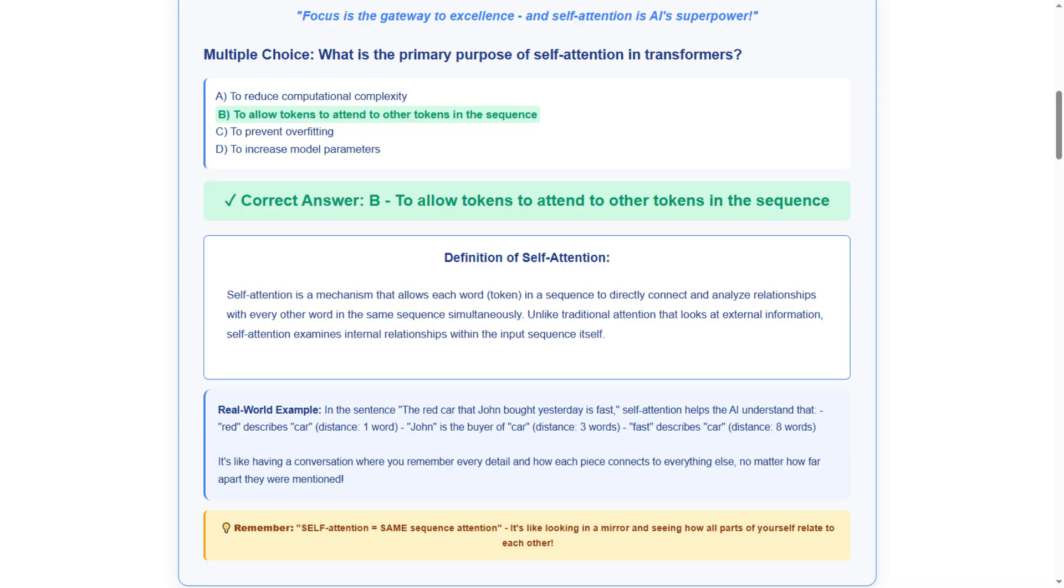Our real-time example demonstrates connection across word distances. Red to car is one word apart. John to car is three words apart. And fast to car is eight words apart. This shows distance-independent understanding. The memory tip tells us self-attention equals same-sequence attention, like looking in a mirror and seeing how all parts of yourself relate to each other.